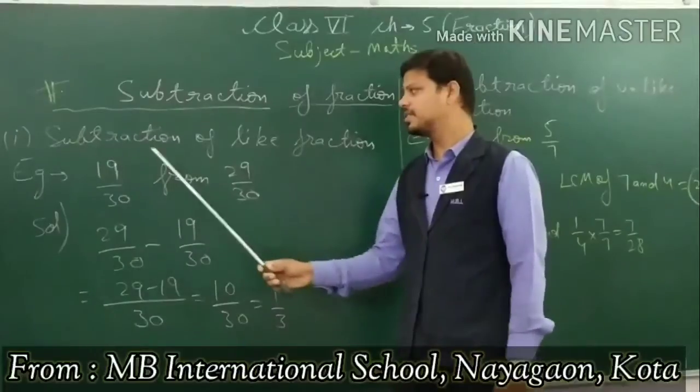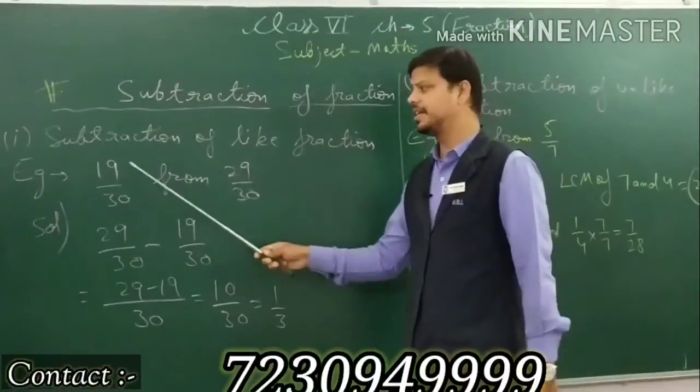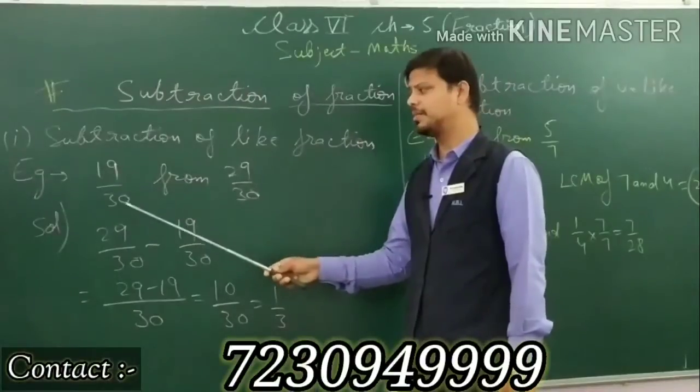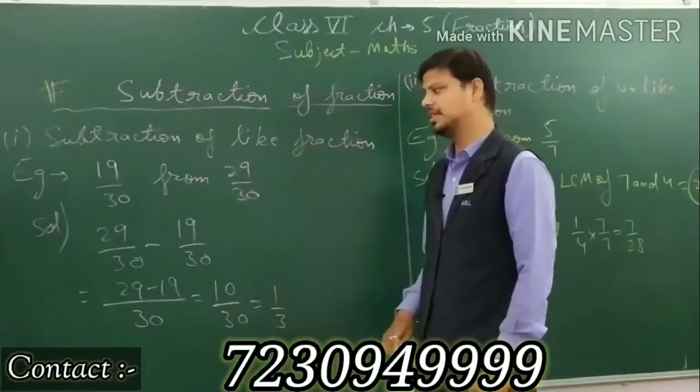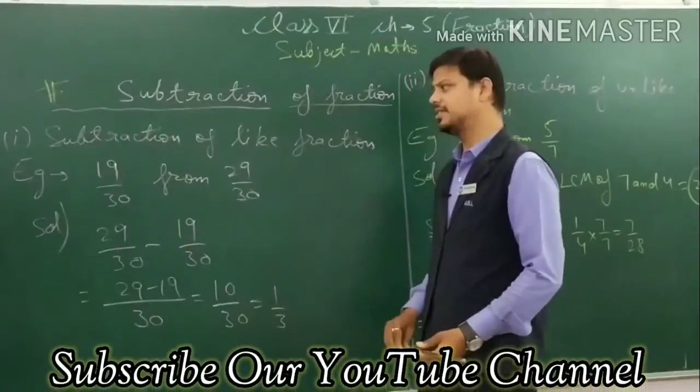First topic: subtraction of like fractions. First, you subtract the like fraction, 19 upon 30 from 29 upon 30. 19 upon 30 and 29 upon 30 are like fractions and you have to subtract them.